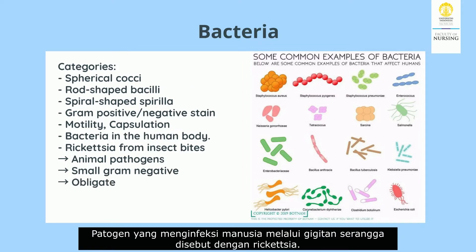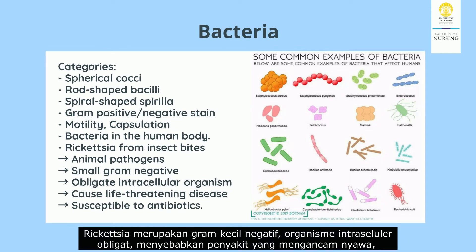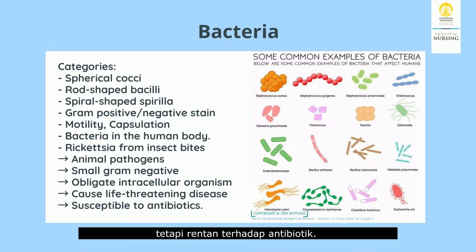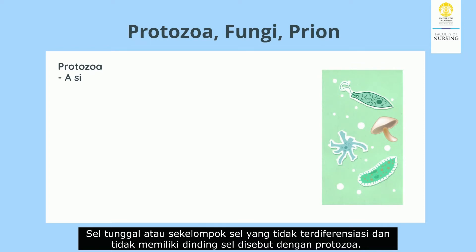Pathogens that infect humans through insect bites are called rickettsia. Most rickettsia are animal pathogens. Rickettsia is a small Gram-negative obligate intracellular organism causing life-threatening disease but is susceptible to antibiotics.